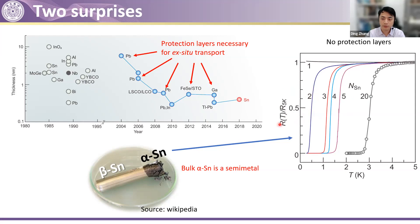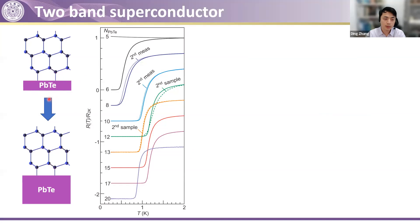There are two surprises. First, for all previous cases grown by MBE, we needed protection layers — otherwise, if we just took out the sample from the UHV chamber, the system could be damaged or superconductivity killed by oxidation or water. But this is not the case for stannene. We grew two layers of tin, just took out the sample from the UHV chamber, and could see superconductivity. Even more, we put these samples on the shelf for a few weeks, remeasured, and could still see superconductivity — it seems pretty robust. We can nicely reproduce these results even after one year.